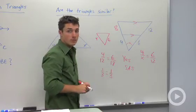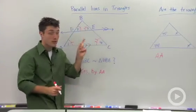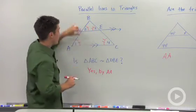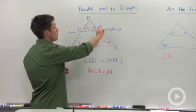So two key things happen with a parallel line and a triangle. First key thing is, it will create two similar triangles, and the ratio of these sides created by that parallel line will be similar.